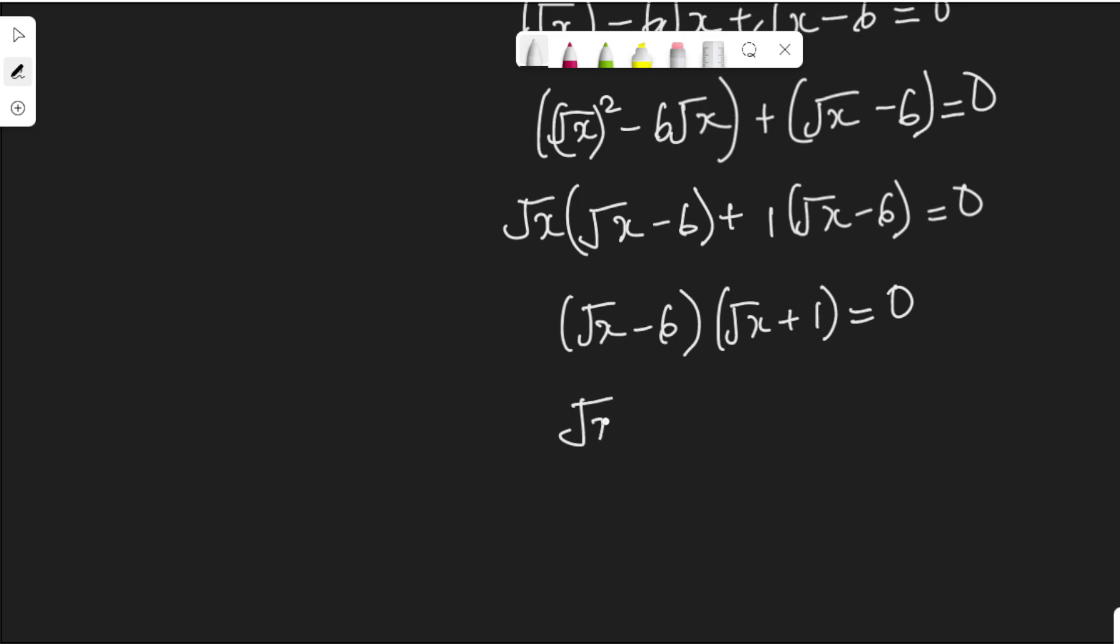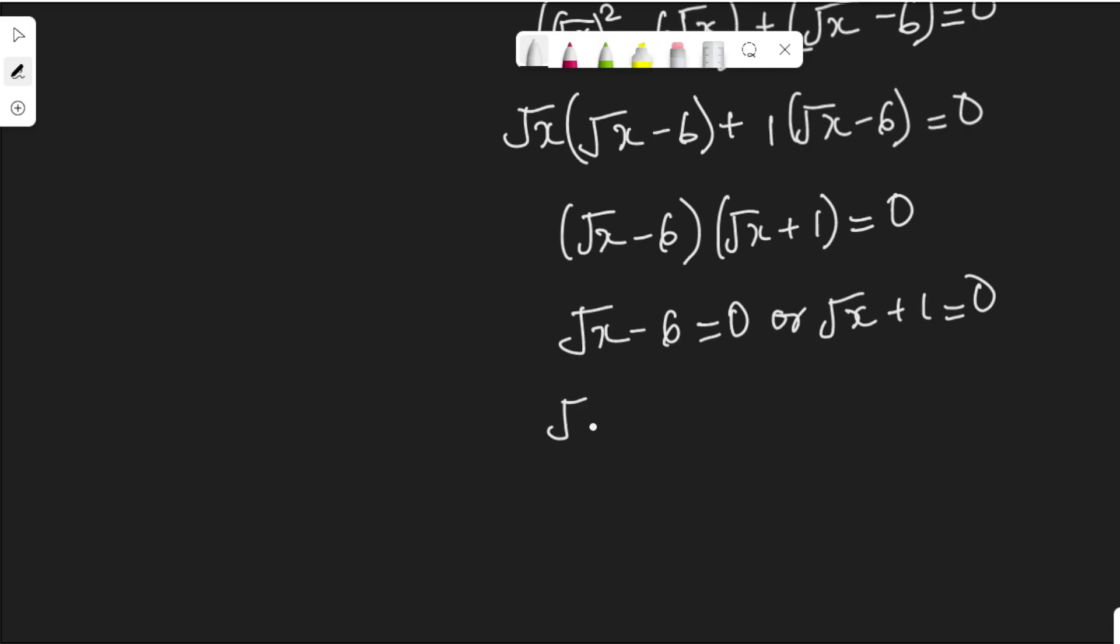See that root s minus 6 is equal to zero or root s plus 1 is equal to zero. That means root s is equal to 6 or root s equal to negative 1. On looking at this, we know that this cannot satisfy the equation. There is no way square root of s would be negative 1. Now we understand. Let's do some and confirm that.